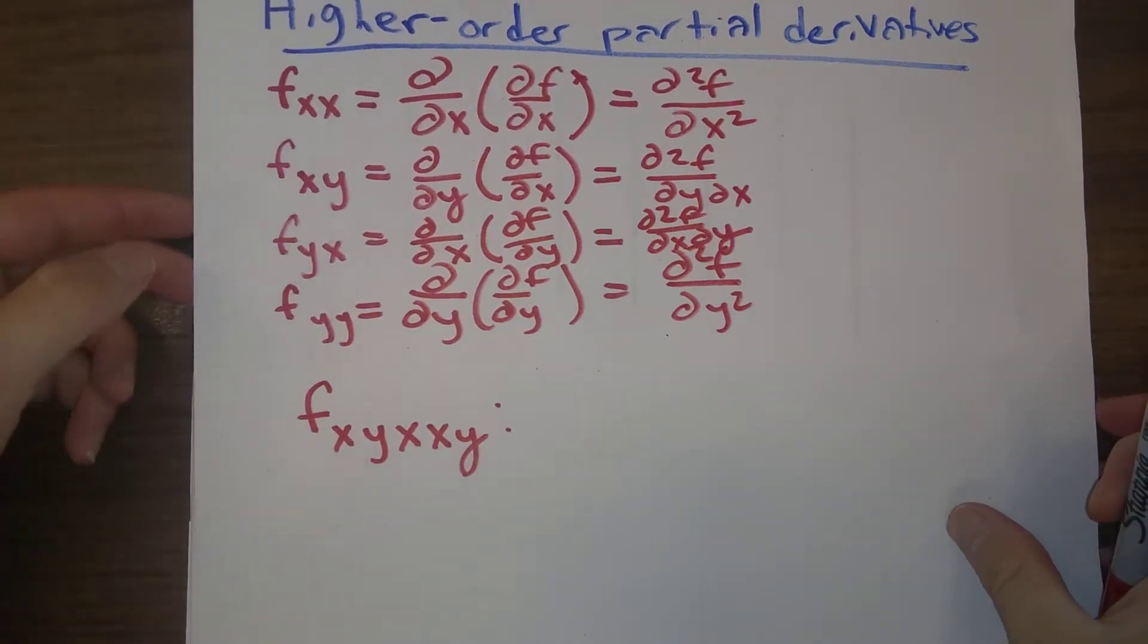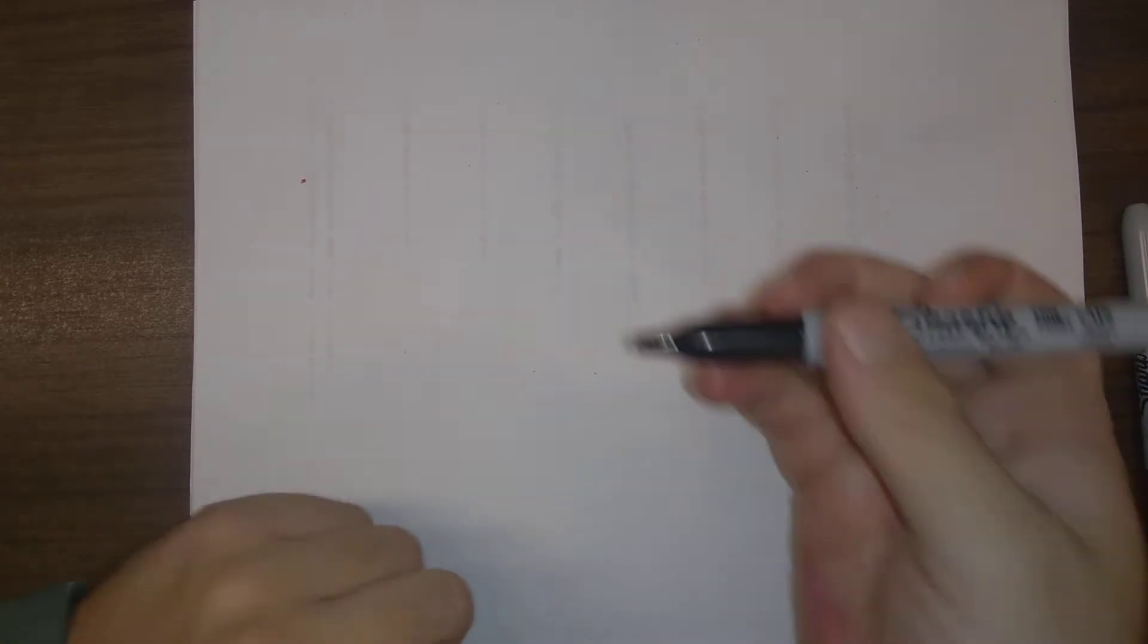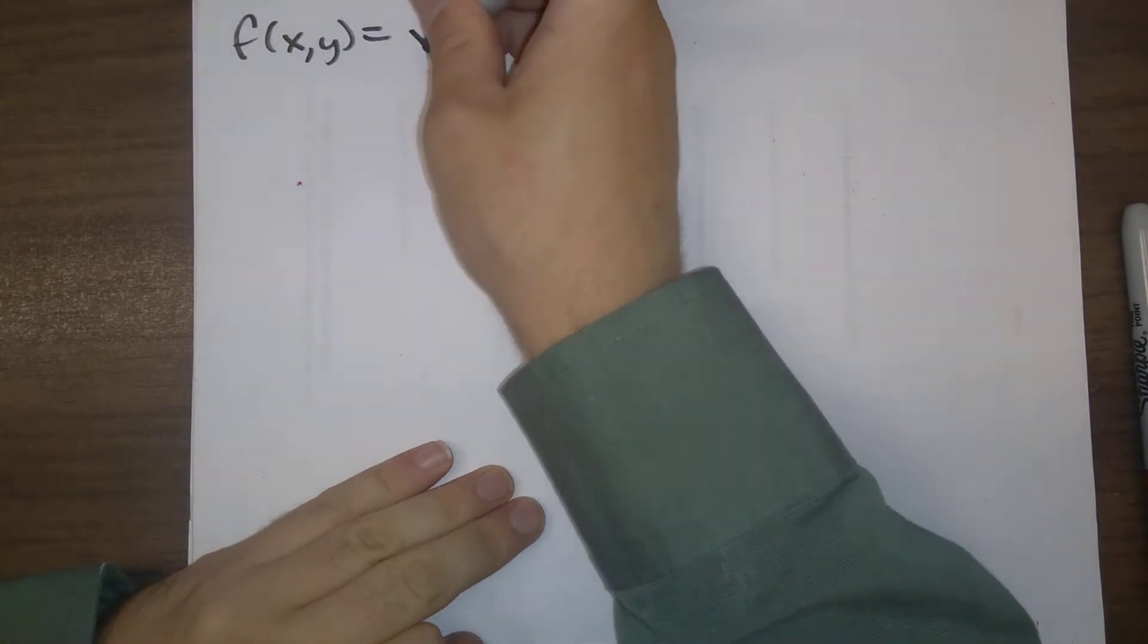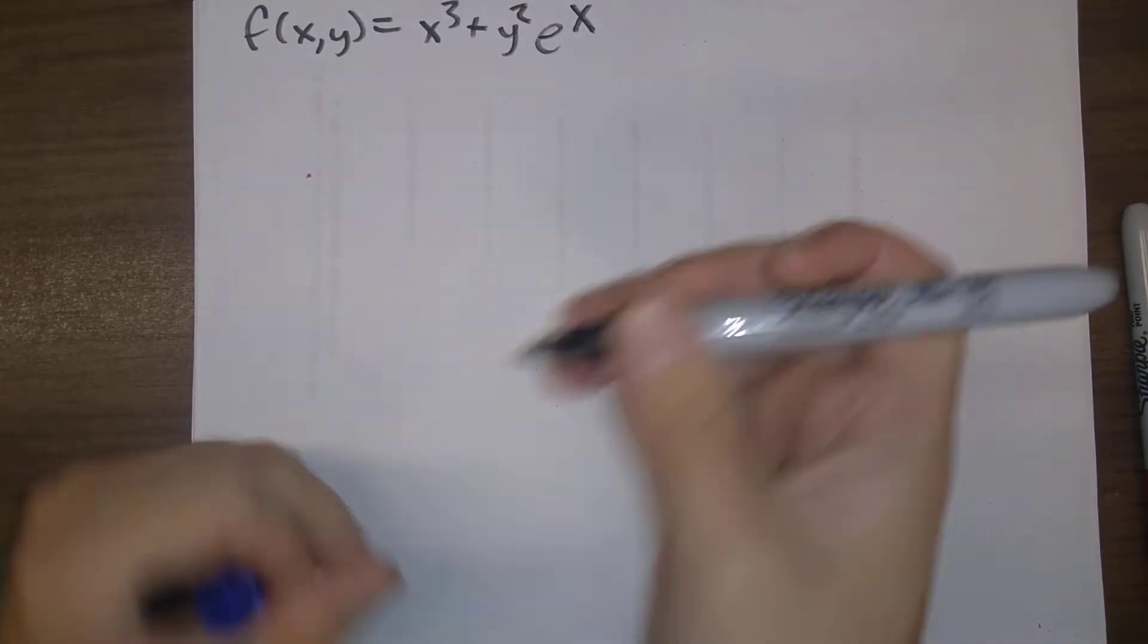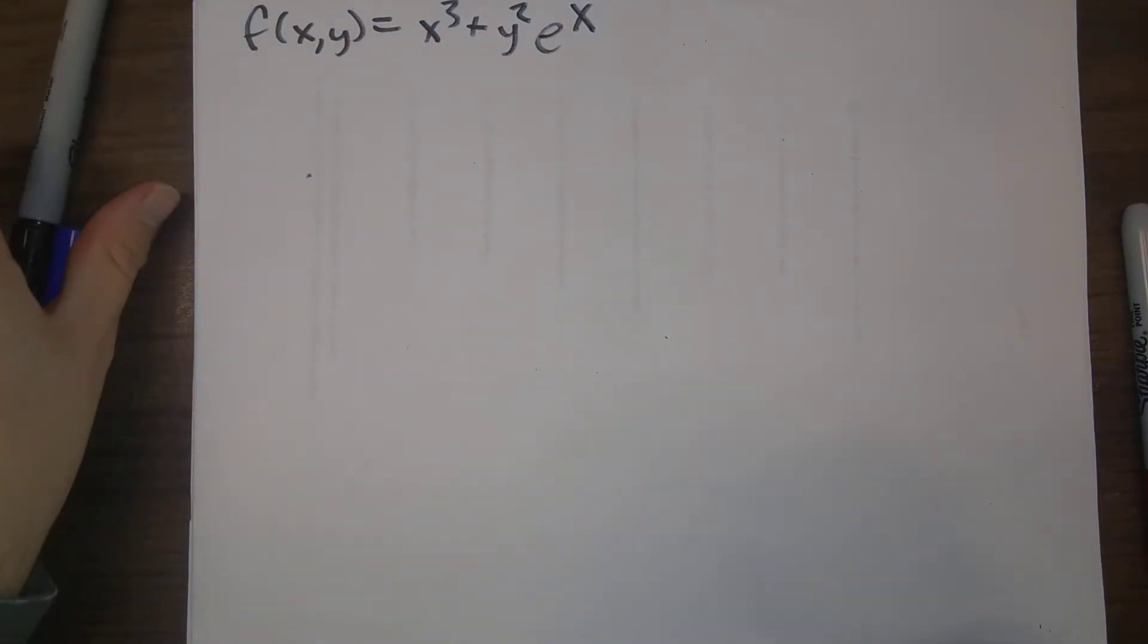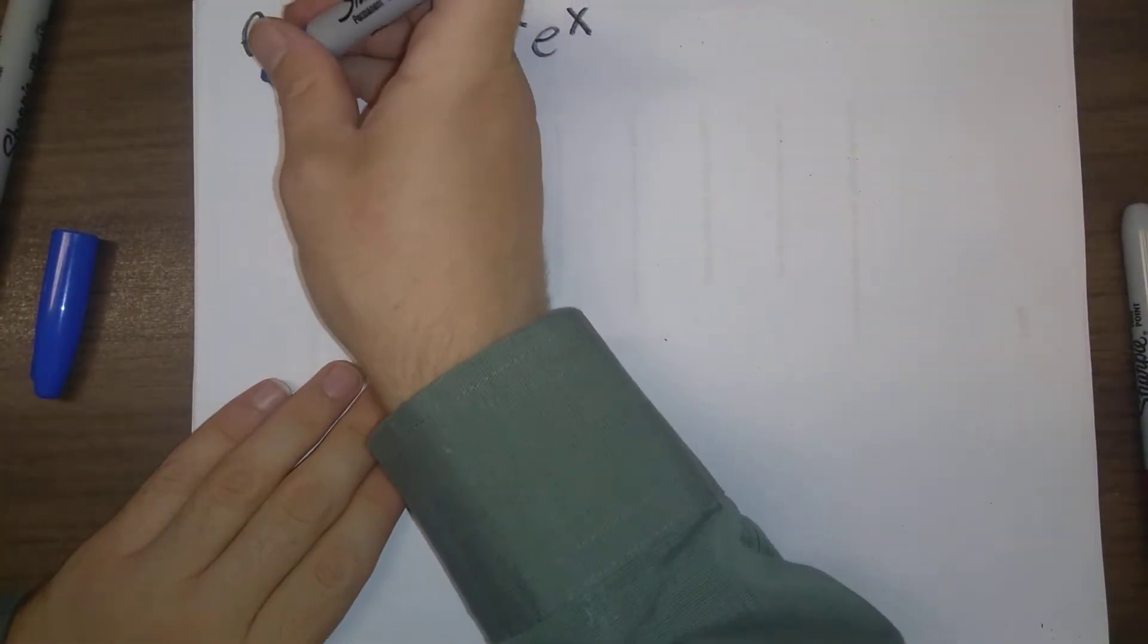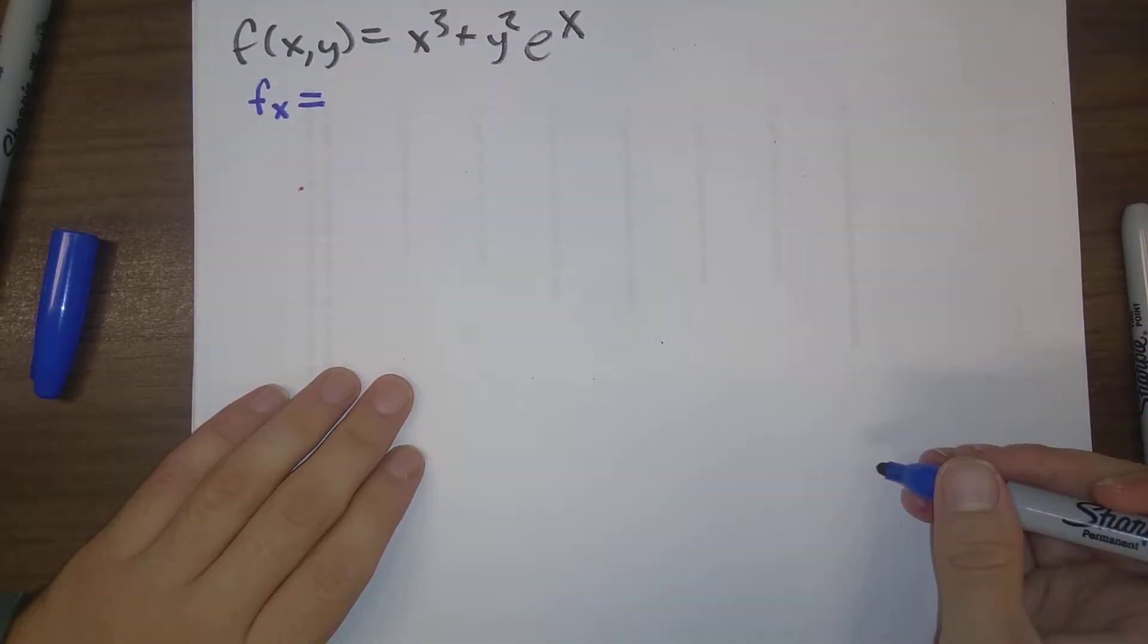Let's work out an example of these four here. So let's say that our function in question is f(x,y) = x^3 + y^2 e^x. So let's calculate out the second-order partial derivatives. First we'll start off by just doing the first-order partial derivatives.